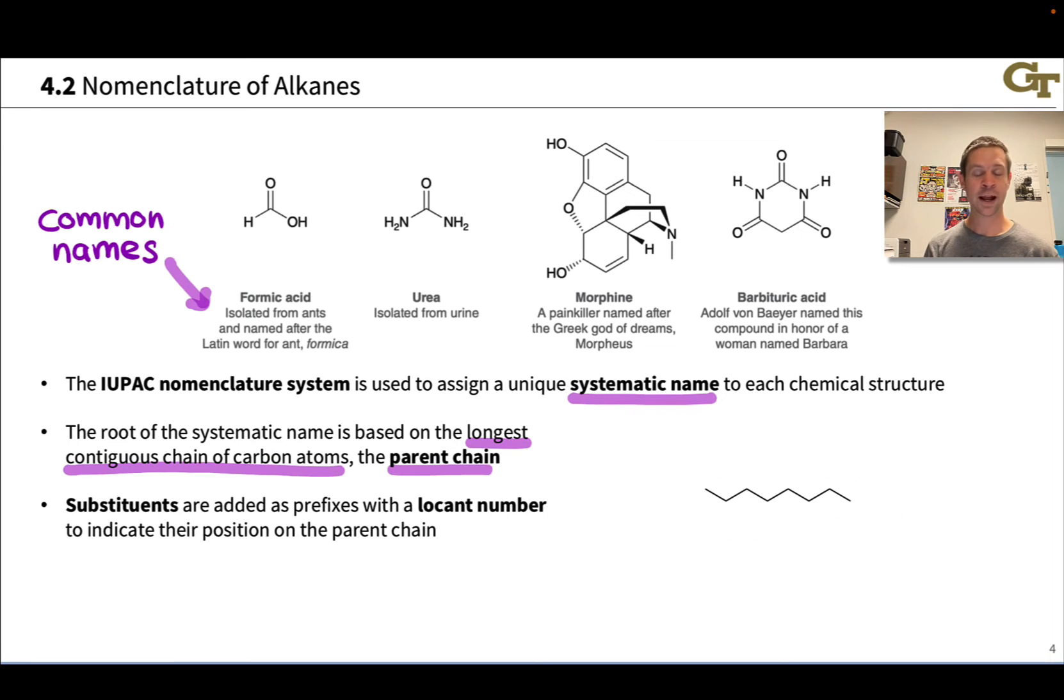For example, here we have a linear chain of carbons, a saturated hydrocarbon with eight carbons in it. And here I've gone ahead and numbered the carbons. This eight-carbon linear chain is known as octane. And without any non-hydrogen groups linked to carbons one through eight, the name of this compound is simply the name of the parent chain, octane.